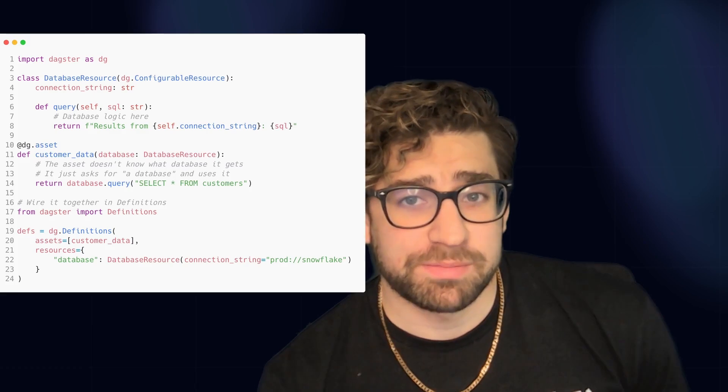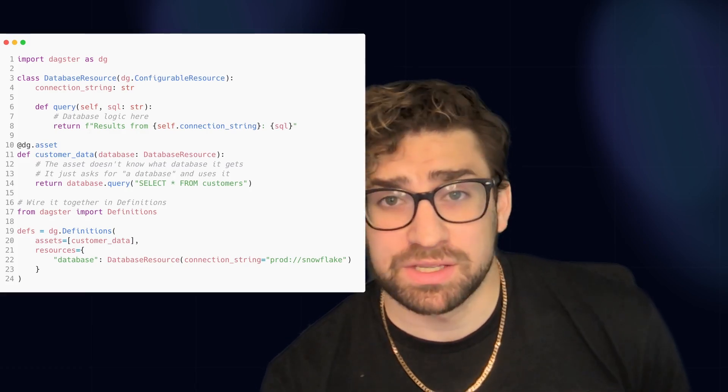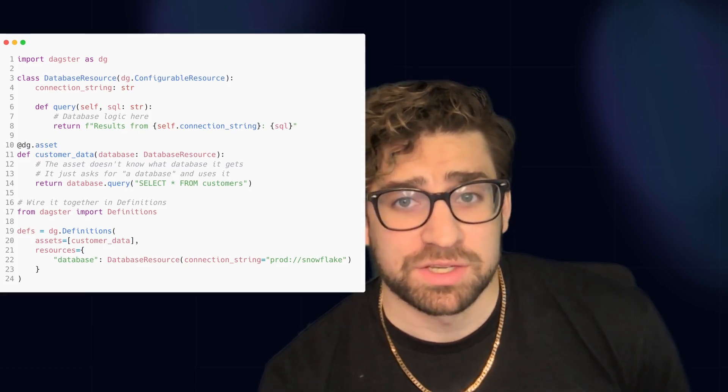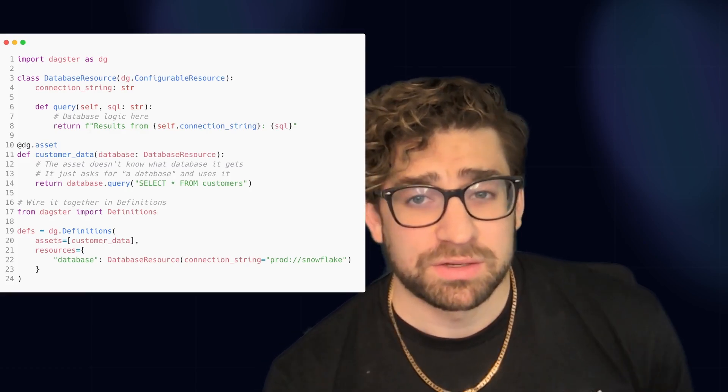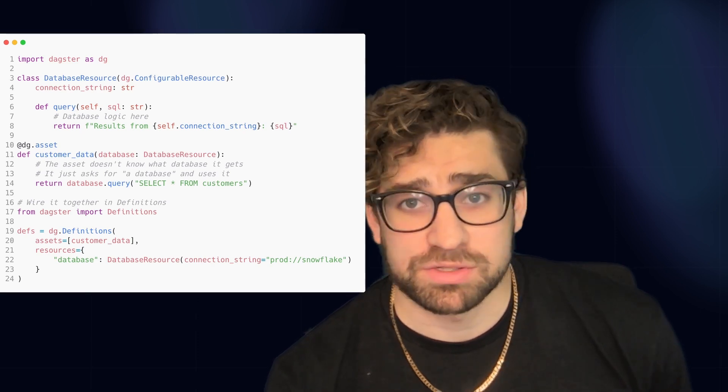Instead of hard-coding your database connections, API clients, or file paths directly into your assets, you inject them as dependencies. Your asset declares what it needs — like a database connection or a storage client — and Dagster provides those resources from outside the function. The separation is powerful because it keeps your business logic clean and focused on the data transformation, while the infrastructure concerns are handled separately.